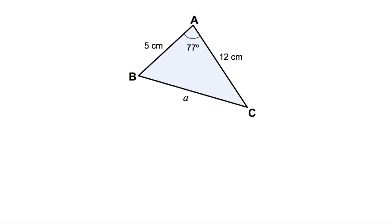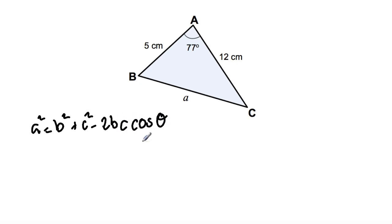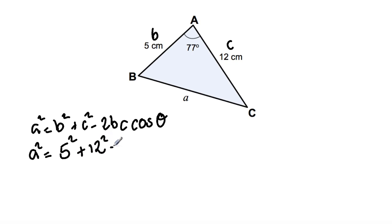Therefore, we're going to be using this equation: A squared is equal to B squared plus C squared minus 2BC cos theta. A is always opposite the angle given to us. I'm going to label one side B and the other side C. We're going to substitute all the information into the equation, so A squared is equal to 5 squared plus 12 squared minus 2 times 5 times 12 cos 77 degrees.